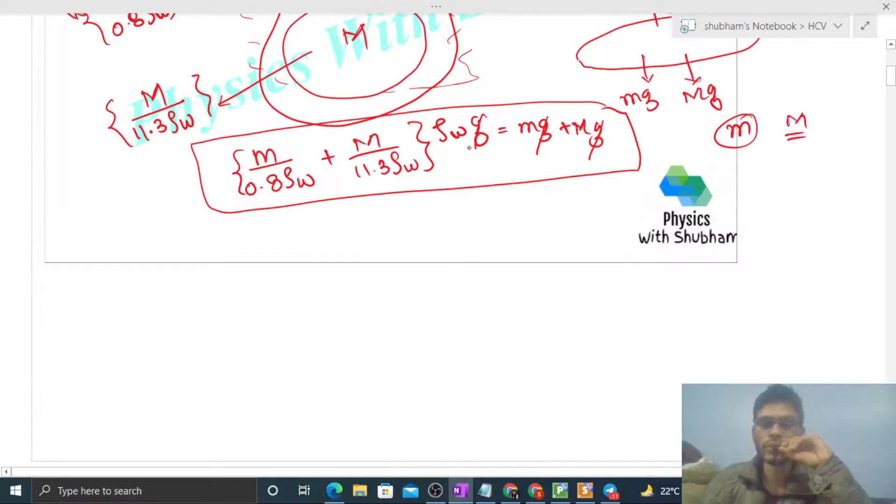So small m wale terms ek taraf le lete hai. Aur density of water bhi cancel ho raha hai. So small m/0.8 minus small m, that is equal to capital M minus capital M divided by 11.3.